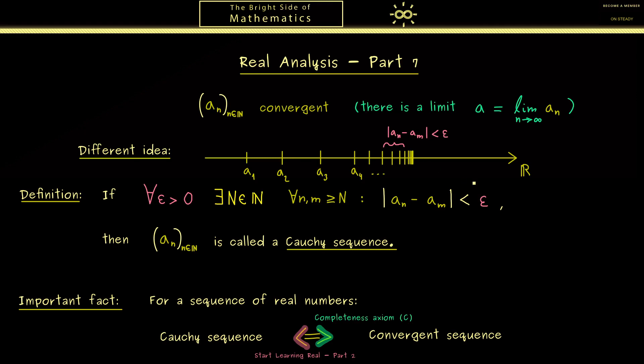So the completeness axiom tells us that there are no holes in our complete real number line.